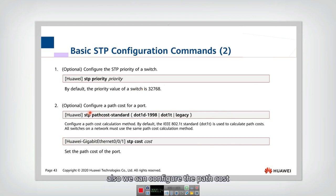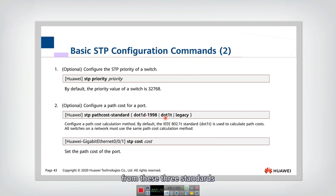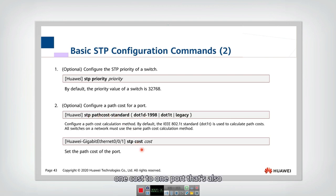We can also configure the path cost for a port using one of two ways. We can use this command to configure the port cost from these three standards and select one to configure. Or we can simply give one cost to one port directly.